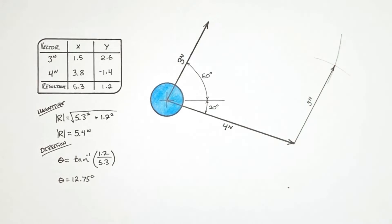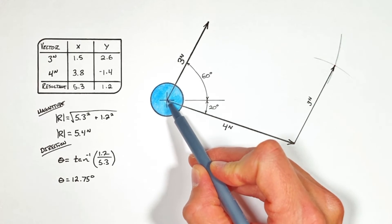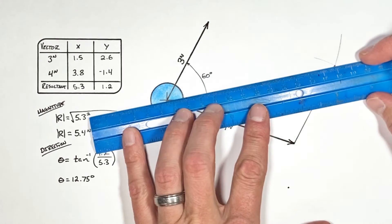And the resultant vector is represented by the distance and direction from where we started our vector train to where it ends.